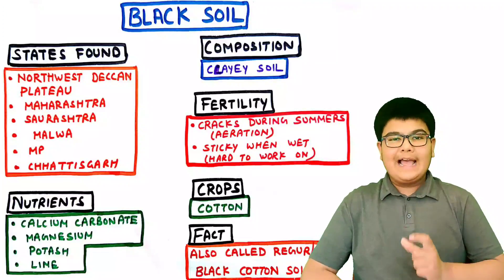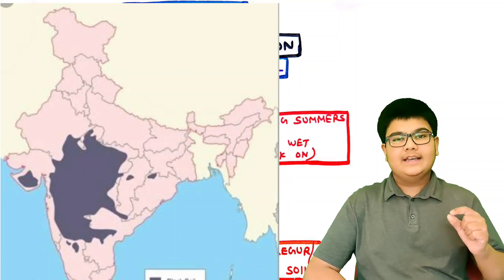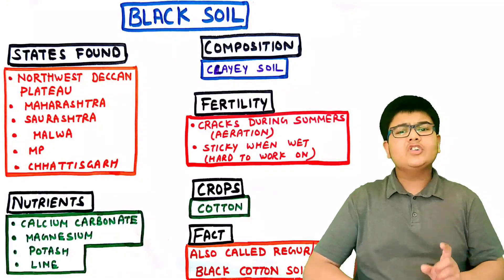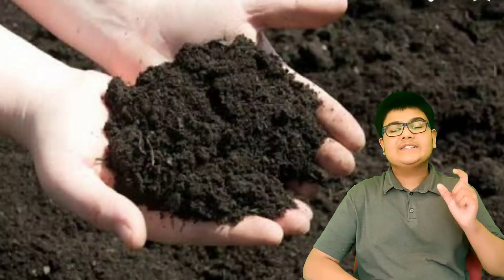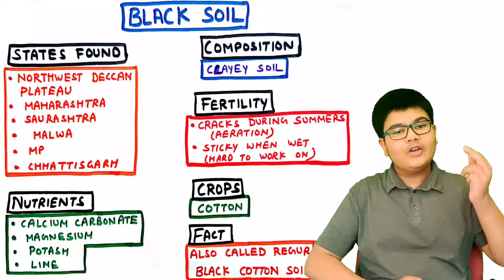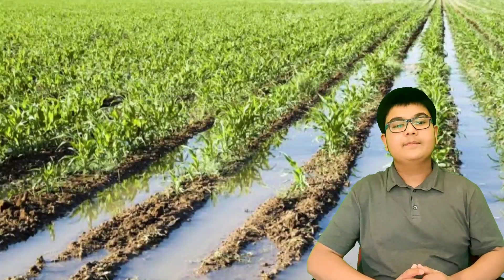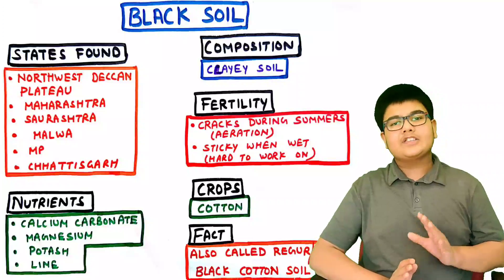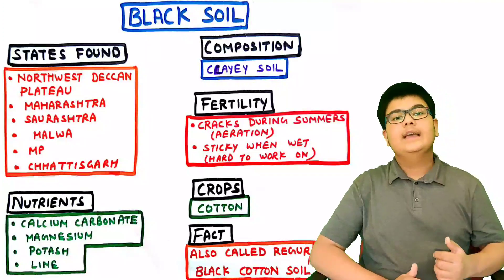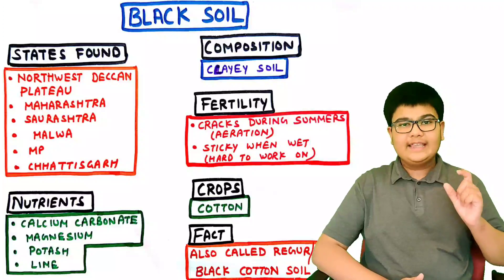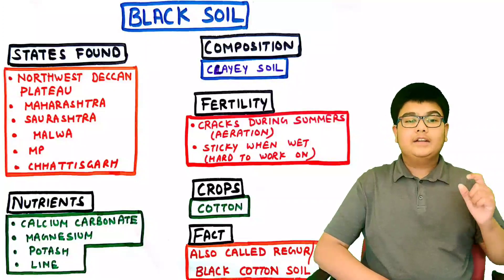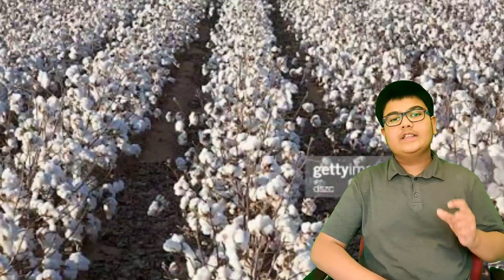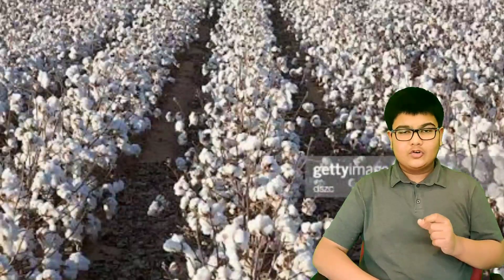Black soil is found in the region of the North-West Deccan Plateau, including the states of Maharashtra, Saurashtra, Madhya Pradesh, Chhattisgarh, etc. It is composed entirely of clay, giving it very fine particles and very high water retention capacity. It is very sticky during the rainy season and hard to work upon. It contains nutrients such as calcium carbonate, magnesium, potash, and lime, but is deficient in phosphoric nutrients. During summer, it develops cracks which help in aeration of the soil. Black soil is best for cotton crop growth, so it is also known as regur soil or black cotton soil.